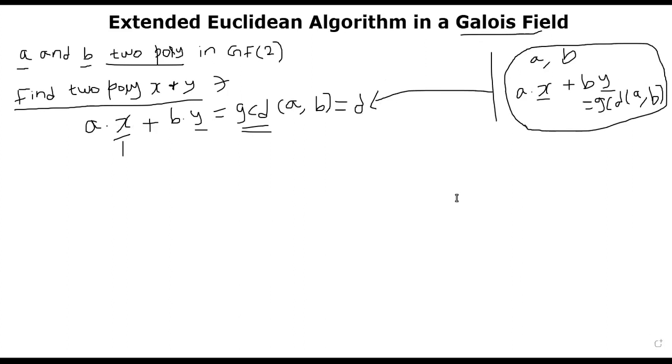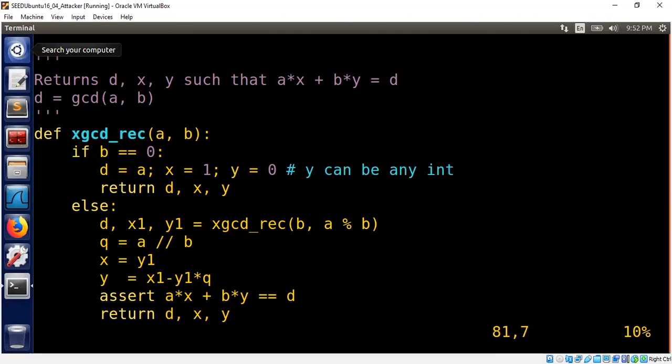Alright, let's get started now. So this is the regular extended Euclidean algorithm. I have a recursive version of it. In Python, you need to make sure that the recursion doesn't go out of bounds, so you have to adjust the stack space.